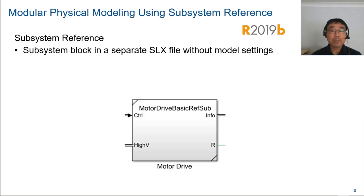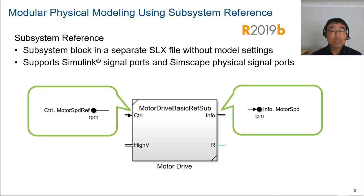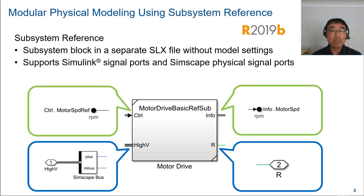Subsystem reference is an independent SLX file containing a subsystem without model settings. Subsystem reference supports both Simulink signal ports and Simscape physical signal ports at the interface. For example, this motor drive block is a subsystem reference block. It has Simulink buses, Simscape node, and Simscape bus. Because subsystem reference is a separate file, it can be used from multiple models.